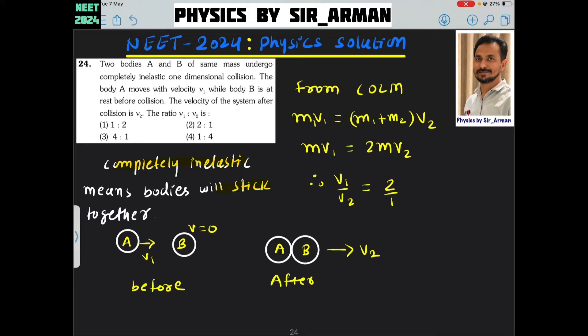It is given that body A moves with velocity V1 while body B is at rest. In the initial situation, body A is moving with V1 velocity and B is at rest. After collision, they move with a velocity which is given here V2.